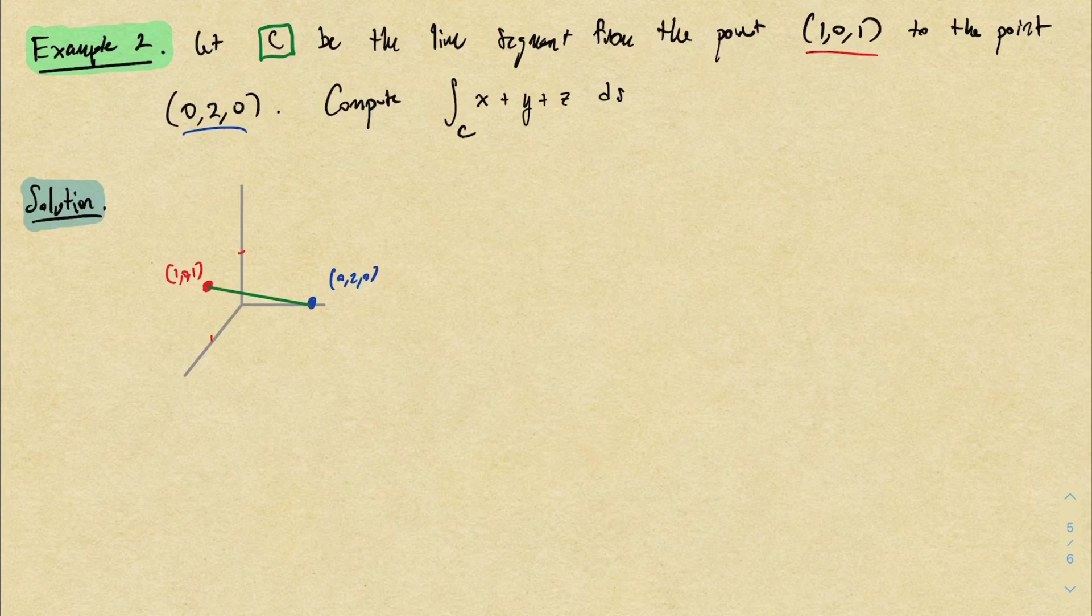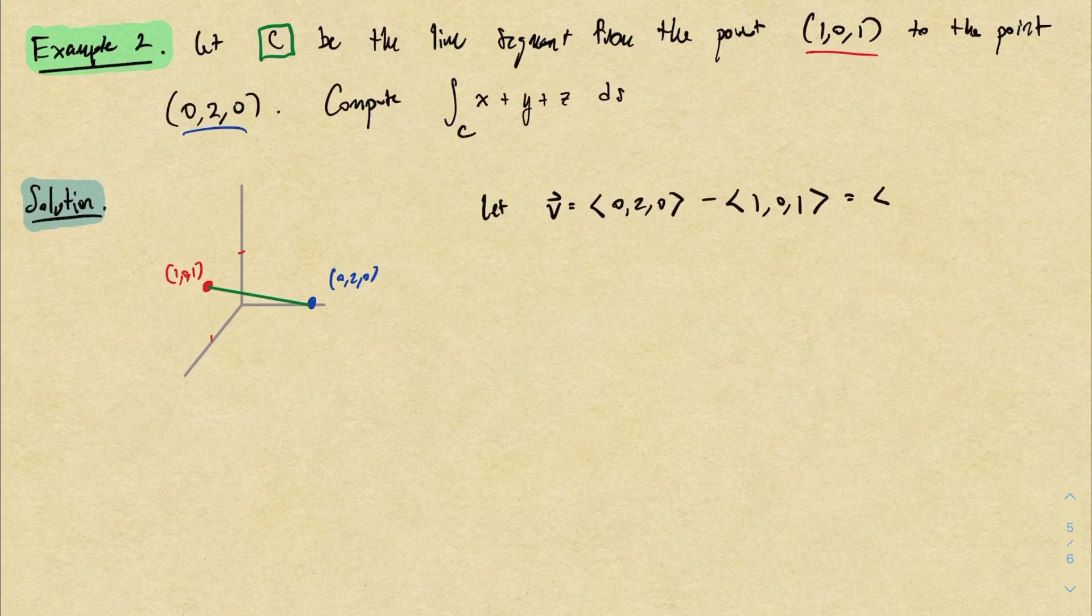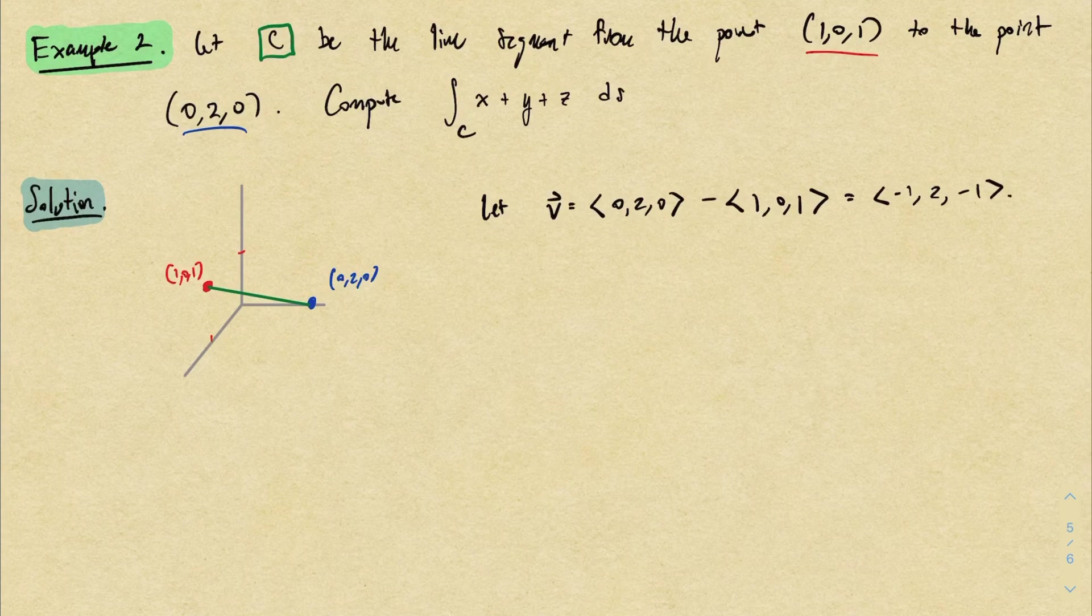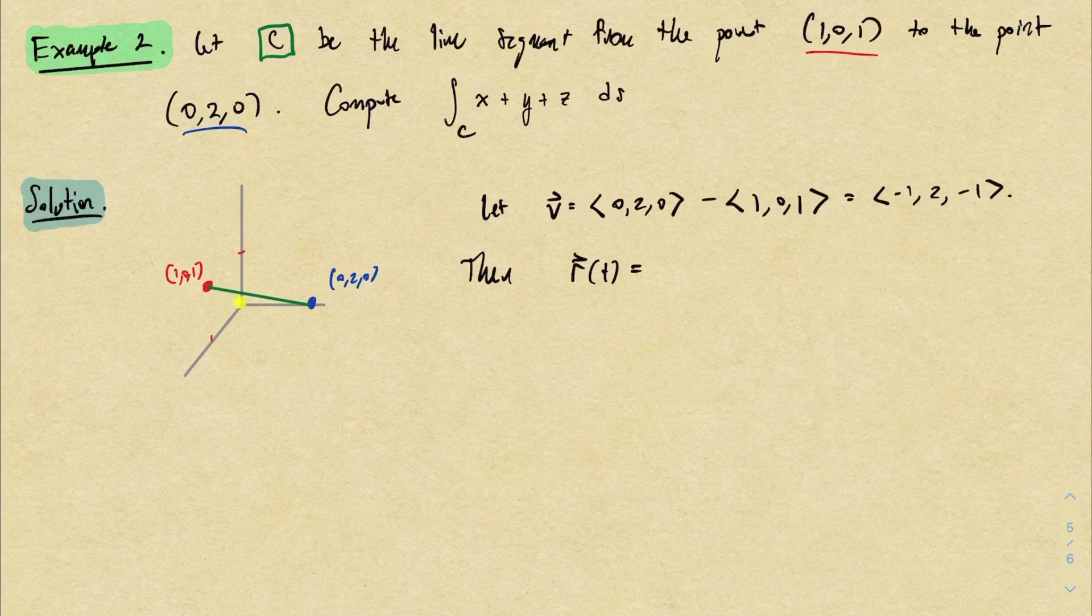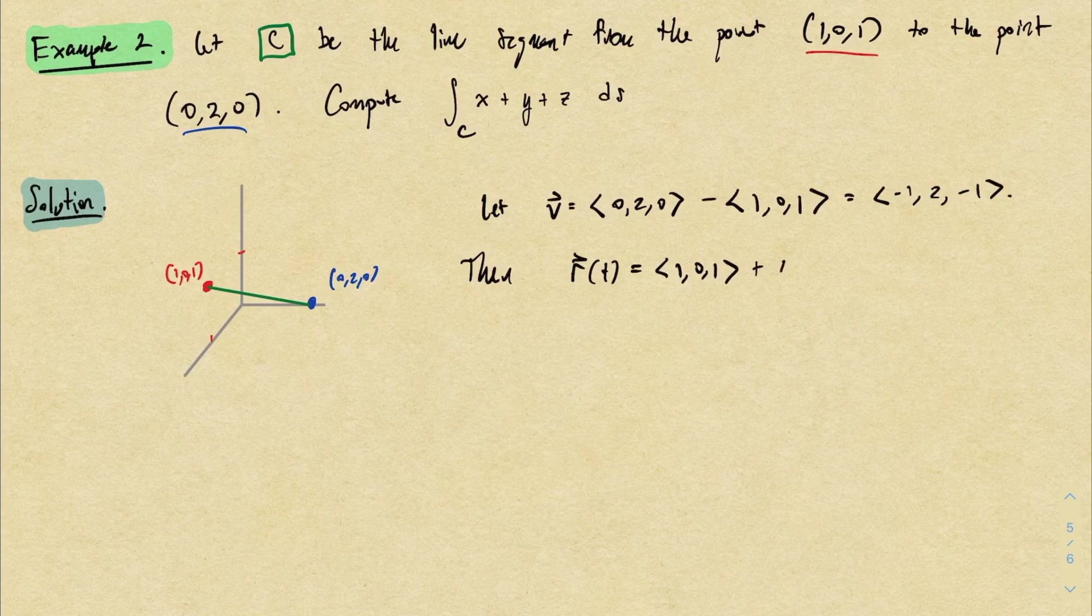In other words, I could let v be (0, 2, 0) minus (1, 0, 1). That's exactly the vector going from the red point to the blue point. There's our direction vector. And then if I want to parameterize the segment, I could start at the point (1, 0, 1) and then travel along that direction vector I found. So I would let r(t) be (1, 0, 1) plus t times the direction vector.